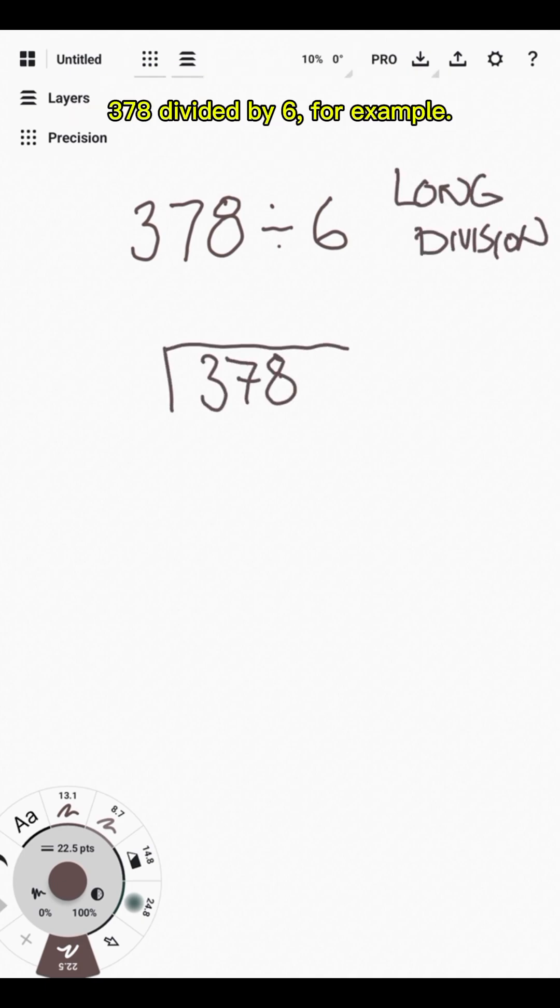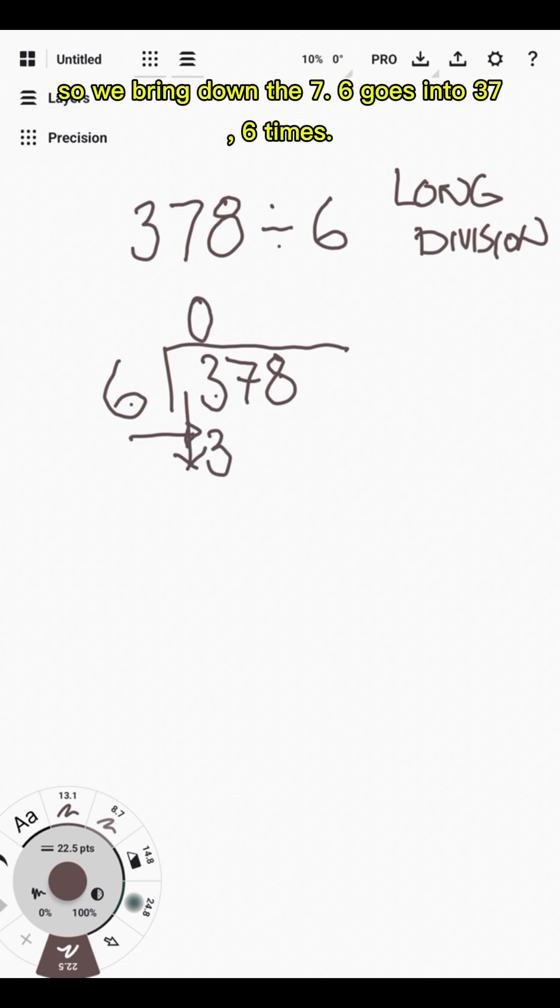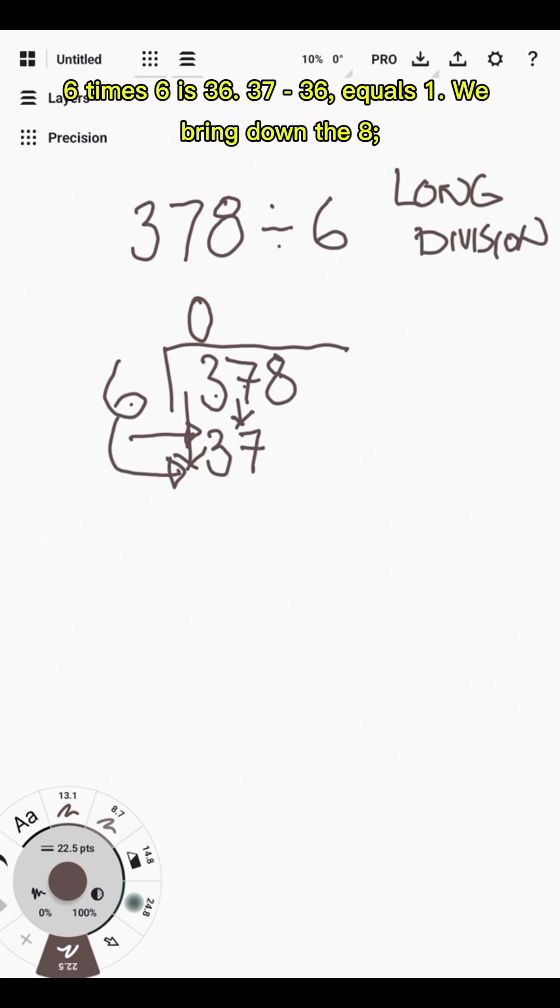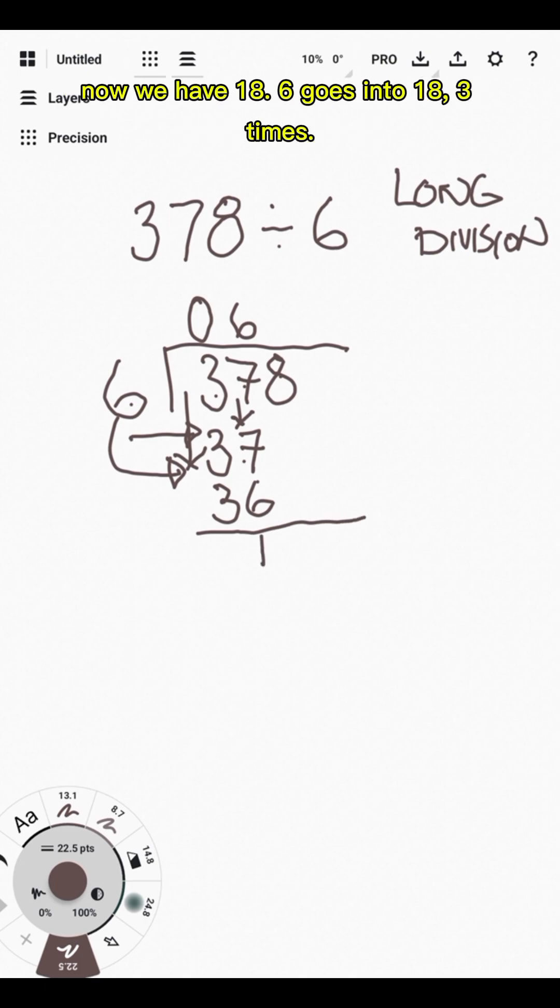378 divided by 6, for example. It won't go into 3, so we bring down the 7. 6 goes into 37 six times. 6 times 6 is 36. 37 minus 36 equals 1. We bring down the 8. Now we have 18. 6 goes into 18 three times.